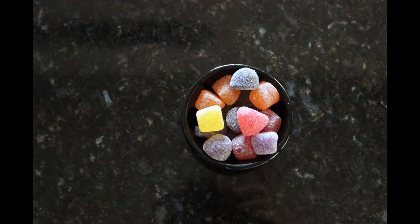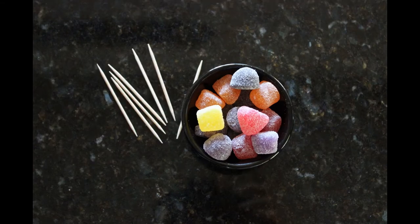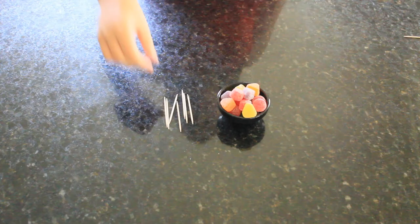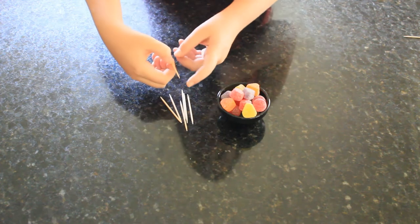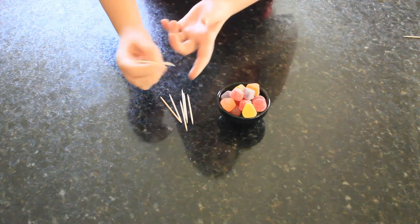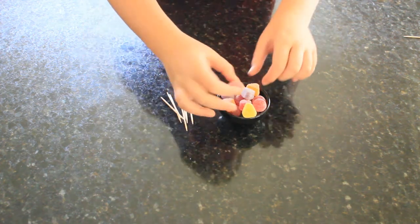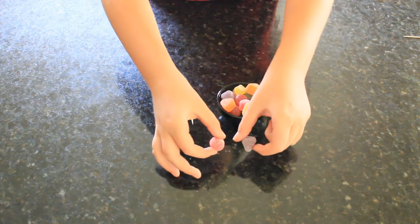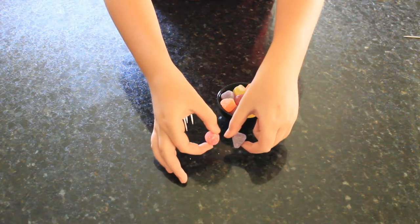For one snowflake jube, you will need 19 jubes and 6 toothpicks. Make sure your toothpicks are pointy on both ends. It will make it easier. I used jubes that were different shapes to get the different snowflakes.